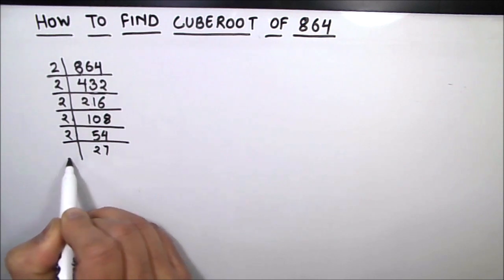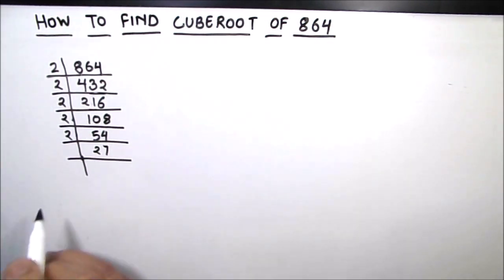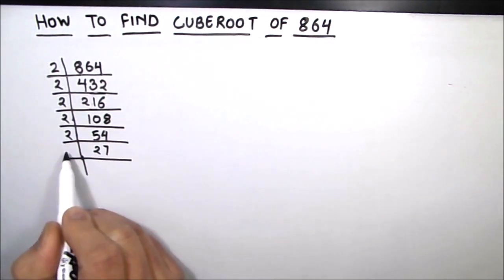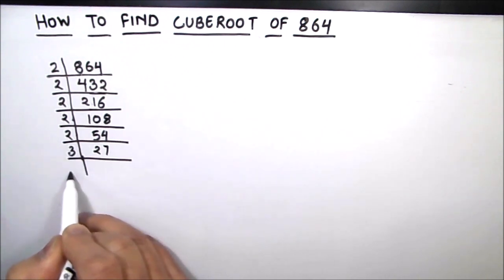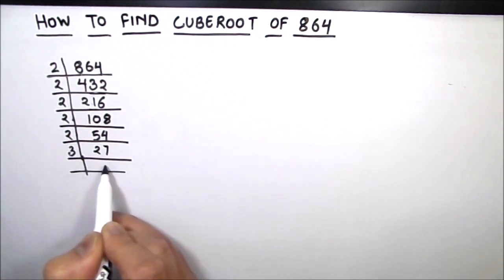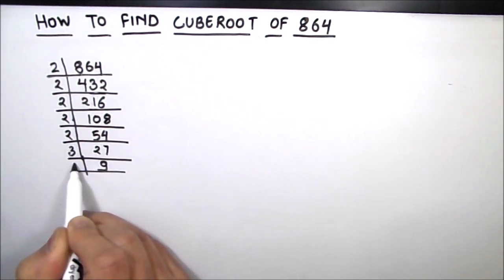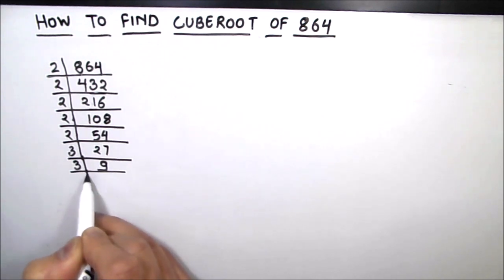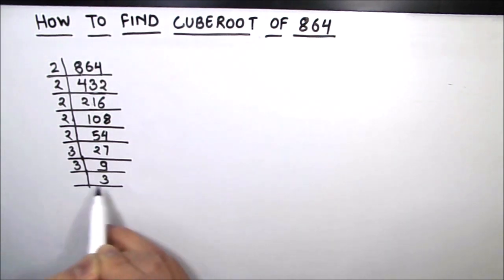Now 27 is an odd number, so we are going to use 3 to divide it. 3 times 9 is 27, 3 times 3 is 9, and 3 times 1 is 3.